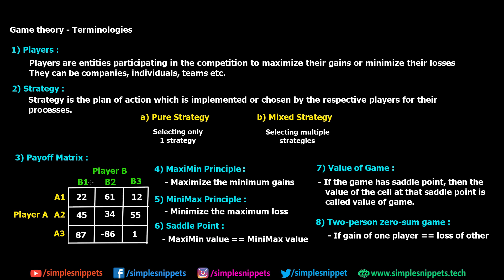When solving numericals we use the maximin principle and the minimax principle. In the maximin principle, player A maximizes the minimum gains. In the minimax principle, player B minimizes the maximum loss. Player A always uses maximin and player B always uses minimax — this is the standard convention used in these numericals.